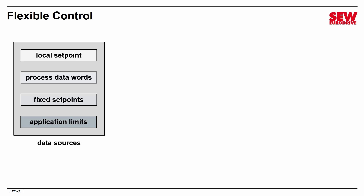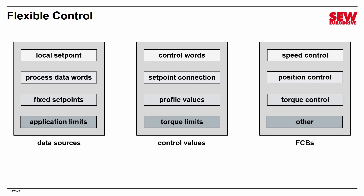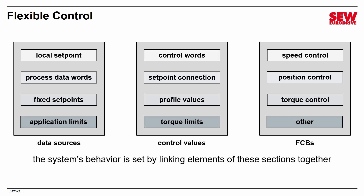These are all data sources — you don't necessarily have to use them all, but they're all available. Then you have control values that directly connect to the FCBs and control them. These include control words, setpoint connections, profile values, and torque limits. All of these pull their data from the data sources and then route them to the FCBs. It's like a virtual switchboard that isn't wired up, and you can wire it yourself. You can connect data sources to control values to FCBs in many different ways, and the system's behavior is set up by linking these elements together — it's virtual wiring.